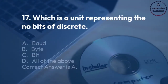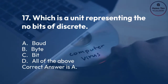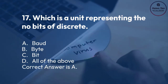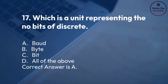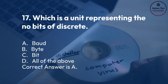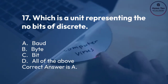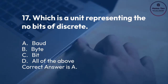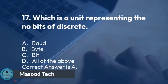Number 17. Which is a unit representing the number of bits of discrete? A. Baud. B. Byte. C. Bit. D. All of the above. Correct answer is A.